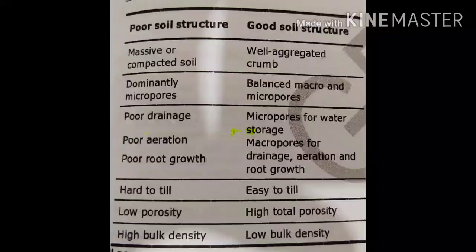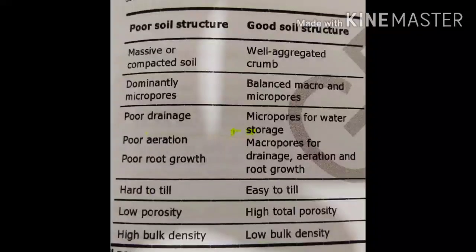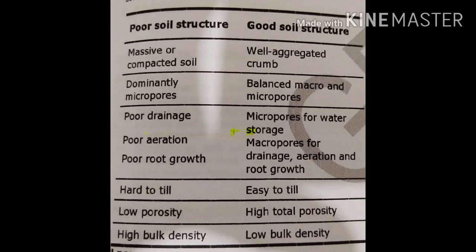What are macro and micropores? From the word micro, which means small — a micropore is a small hole in the soil, representing the spaces between particles. Micropores help to retain water, while macropores help to drain excess water in the soil. That is why macro and micro should be balanced to achieve a good soil structure.